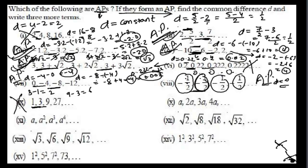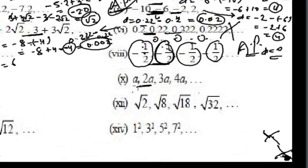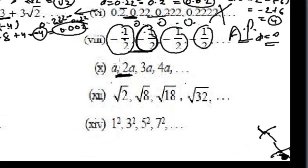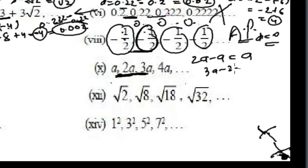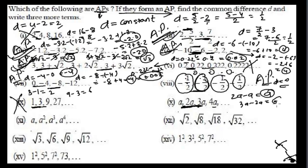For the sequence a, 2a, 3a, 4a: the common difference is 2a minus a equals a. Then 3a minus 2a equals a again, and 4a minus 3a equals a. Since the common difference is the same throughout, this is an arithmetic progression.